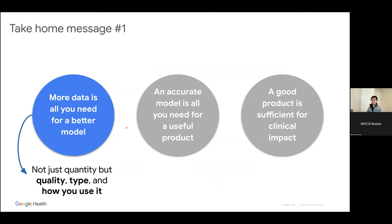To sum up the first myth: more data does generally help, but it's not about quantity — it's about quality, how you're labeling it, whether it's noise-free, what kind of data you're getting (actual image labels vs. auxiliary sources), and whether you can leverage unlabeled data alongside labeled data.